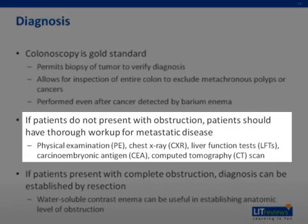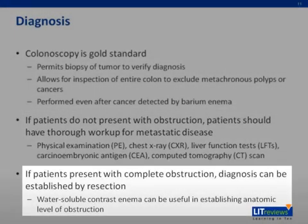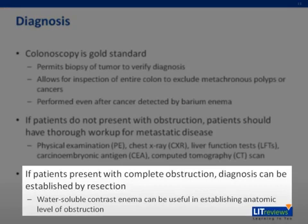Patients with tumors that are not obstructing should undergo a thorough evaluation for metastatic disease. This includes a thorough physical examination, chest X-ray, liver function test, carcinoembryonic antigen level, and CT scan to more thoroughly inspect the liver for metastasis and to search for other intra-abdominal pathology. In patients with tumors causing complete obstruction, their diagnosis is most properly established by resection of the tumor without the benefit of preoperative colonoscopy. A water-soluble contrast enema is often useful in such circumstances to establish the anatomic level of the obstruction.